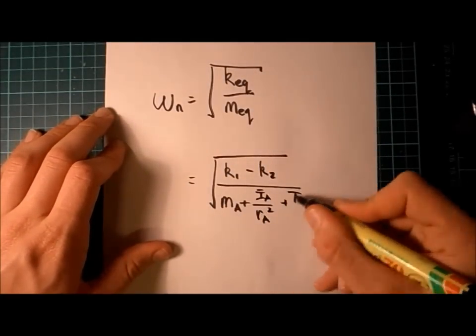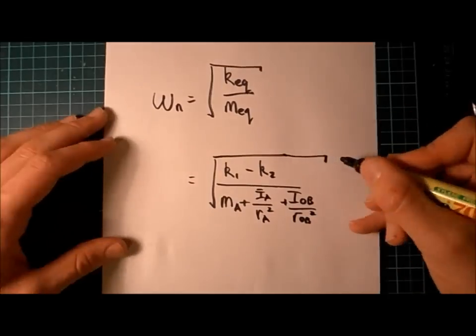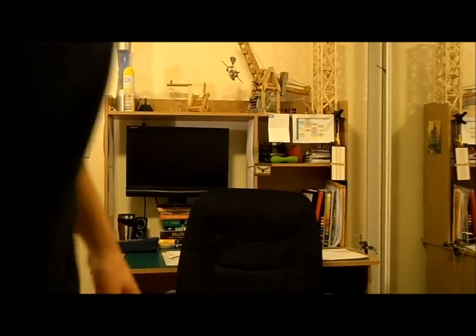We can use this to find system properties, like the natural frequency, which is simply the square root of the equivalent k divided by the equivalent mass.